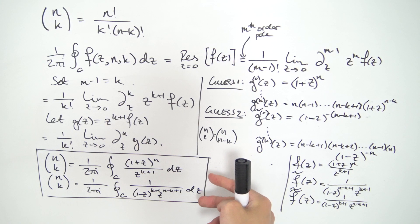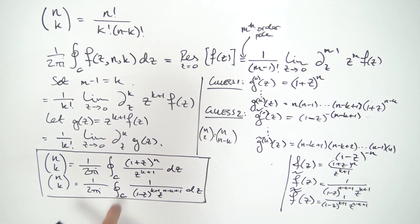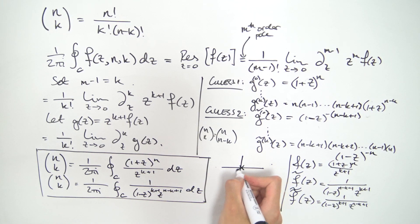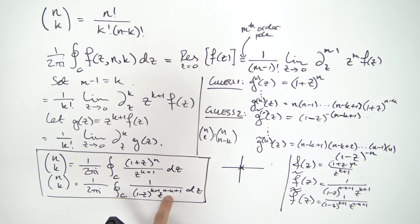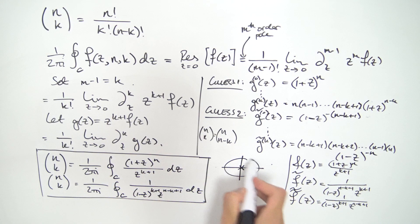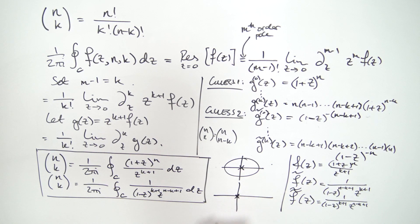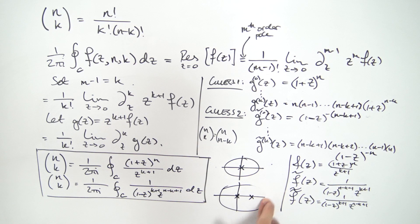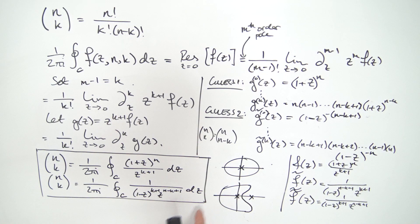A final note: the contour C must enclose the pole at zero. The first representation has a (k+1)-th order pole at zero, so any loop around the origin works. The second representation has poles at both z equals zero and z equals one, so you must choose your contour to enclose only the pole at zero, making sure it does not enclose the pole at z equals one.